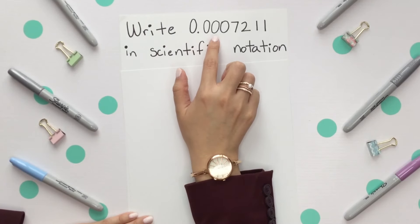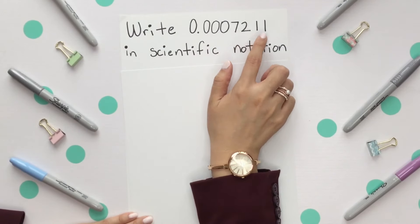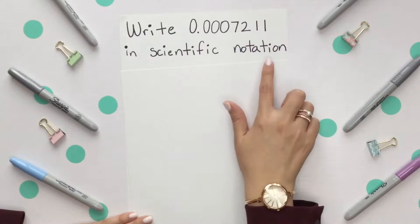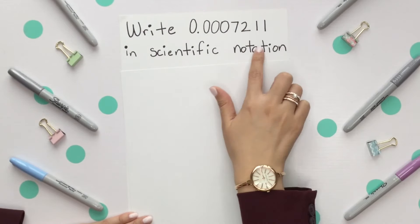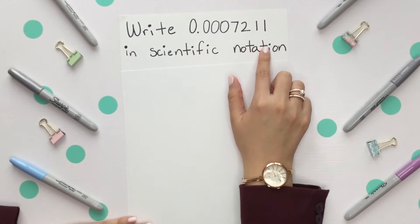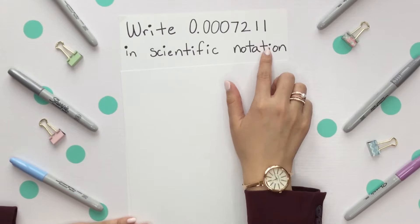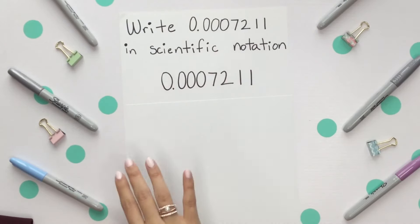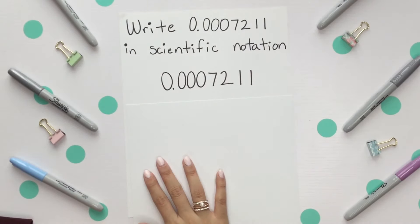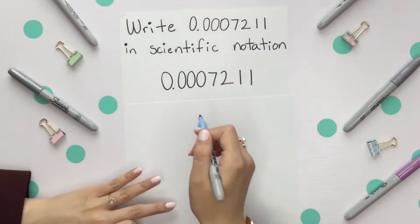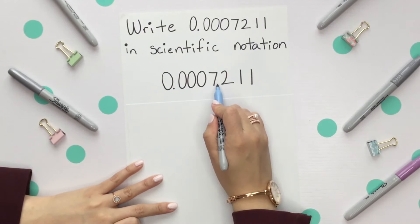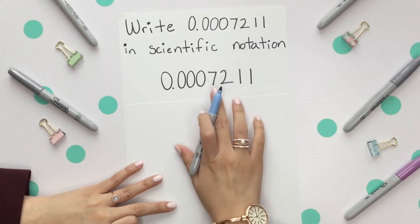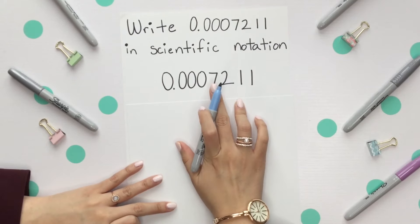Let's try one. Write 0.0007211 in scientific notation. This is your clue: this is a very small number, or it's less than 1, so it will have a negative exponent. What we're going to do is take that decimal place and move it all the way to the 7, because that is your first non-zero number.